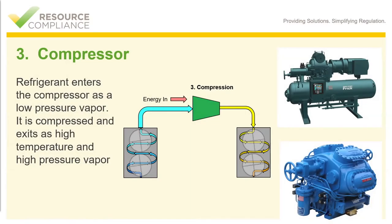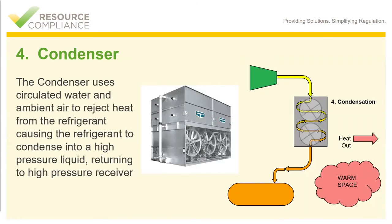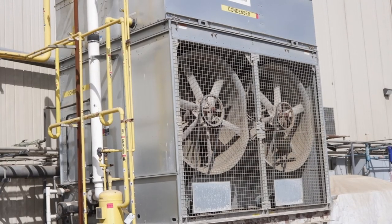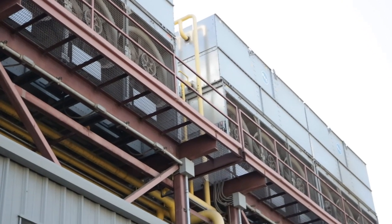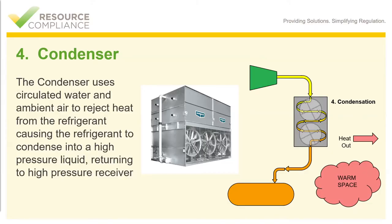After the compressor has raised the low temperature, low pressure vapor to a high temperature, high pressure vapor, in the final stage of the refrigeration cycle we once again see that same principle at work. Heat energy always moves from a warmer space or object to a colder space or object. Here in stage four, the condenser uses circulated water and/or ambient air to reject the heat from the refrigerant to the outside atmosphere, causing the refrigerant to condense back into a high pressure liquid, and then it returns to the high pressure receiver.